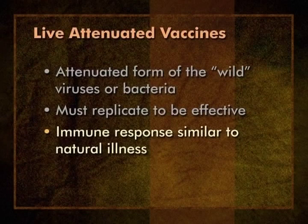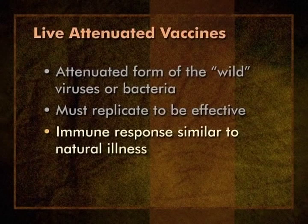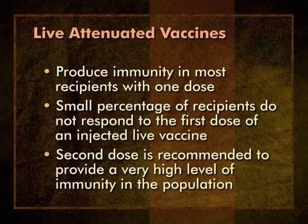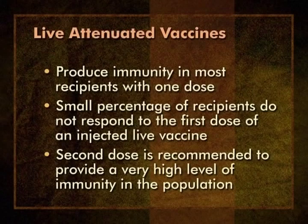The immune response to a live vaccine is very similar to the immune response that occurs following natural illness or infection with the disease-causing form of the organism. The viruses or bacteria replicate until an immune response stops them and eliminates them from the body. As a result, live vaccines produce immunity in most recipients with one dose. However, a small percentage of recipients do not respond to the first dose of an injected live vaccine, such as MMR or varicella. So a second dose is recommended to provide a very high level of immunity in the population. Typically, live oral vaccines require more doses than injected live vaccines.